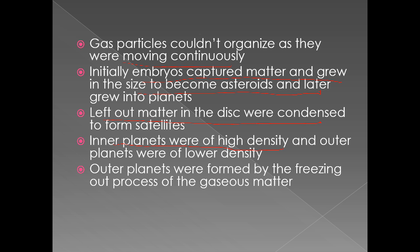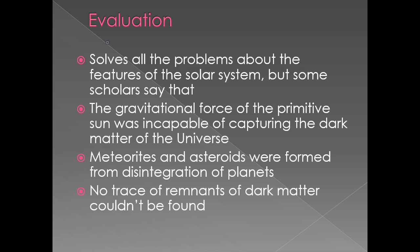Inner planets were of high density and outer planets were of lower density, which matches the present-day solar system where terrestrial inner planets have higher density. Outer planets were formed by the freezing-out process of gaseous matter, since gaseous particles were light and were pushed towards the margins of the disk, where they eventually formed the outer planets through this freezing-out process.